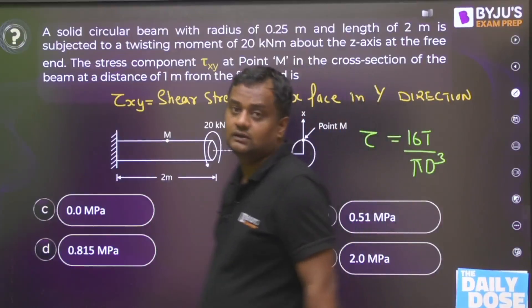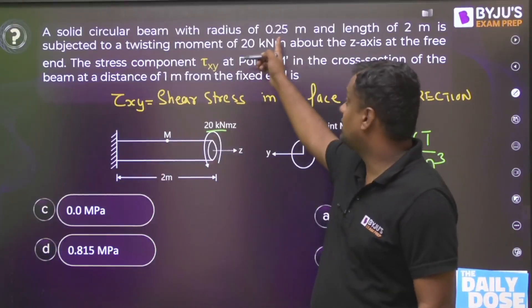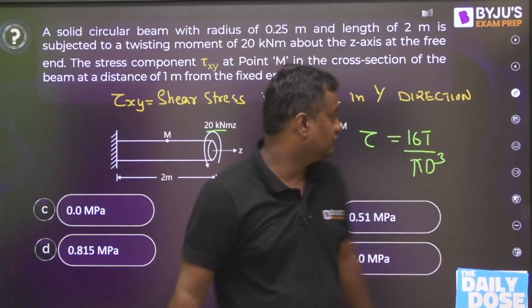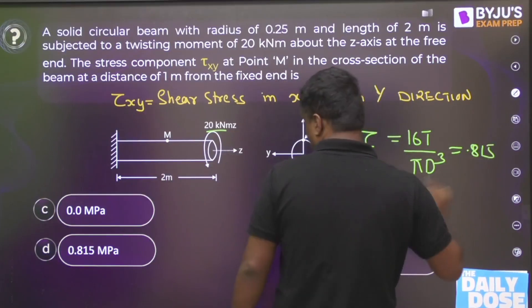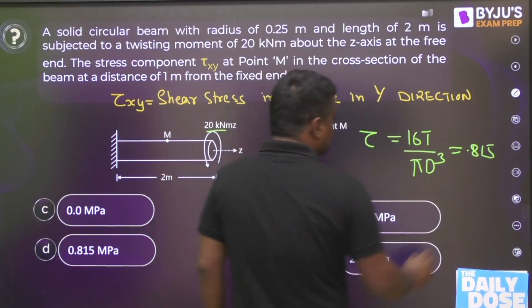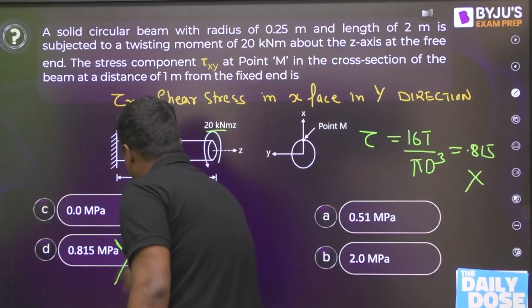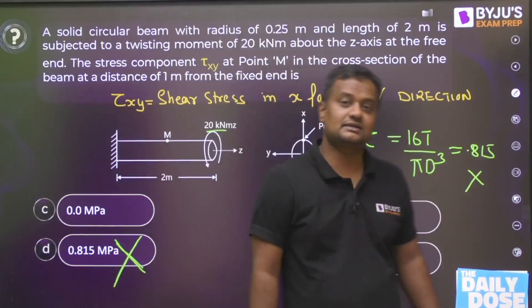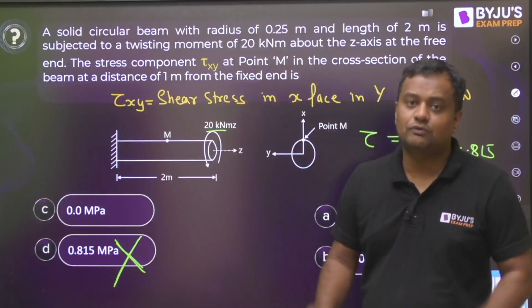The torsion is given as 20 kilonewton-meter. Radius is 0.25, so diameter will be 0.5. From here if you calculate it will be something like 0.815. You will be clicking this option, but that is absolutely wrong. That is why almost everybody clicked this option and that is wrong.